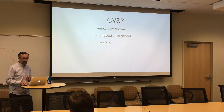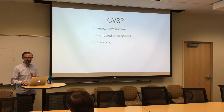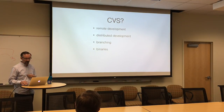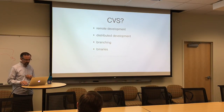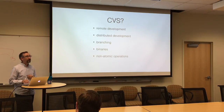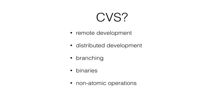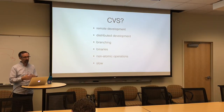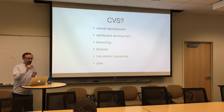Branching in CVS is surprisingly easy, but merging is nearly impossible, making branching not as useful. If you've tried to stick binaries in CVS, it works — but I've corrupted a number of my own CVS repositories through interruption of an operation, and it's kind of slow. CVS came out of the constraints of its time: slow networks, not much disk space.